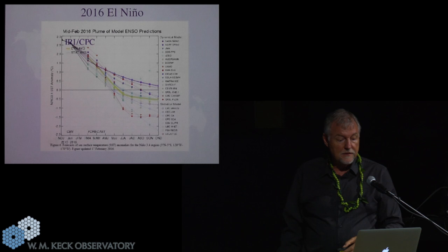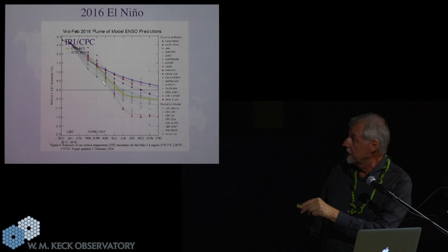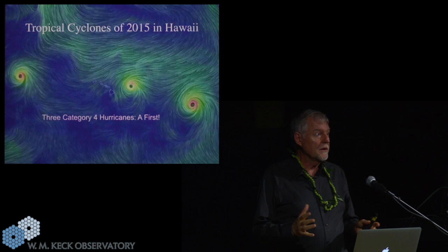These are the models. We model the sea surface temperature with atmosphere-ocean coupled models. And all of the models are taking the warm temperature anomaly that we had and bringing it way down.